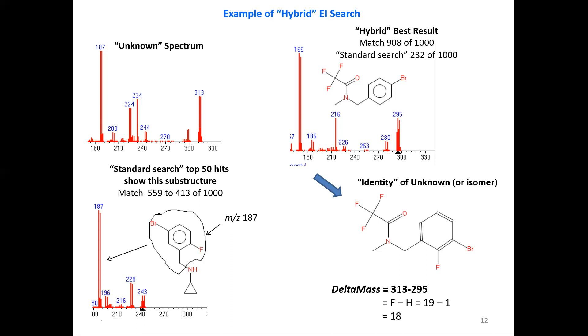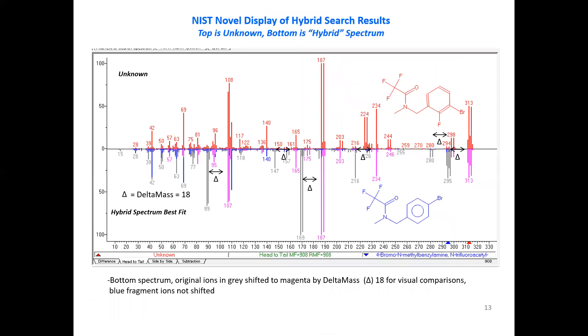They do have a very novel display of the hybrid search results, which I think is very effective and very efficient at looking at the hits in the list. They show here is the hybrid spectrum best fit on the bottom. We have our unknown on the top. Anything that's shifted by the delta mass goes from gray to magenta. And anything fragment ion that was not shifted stays blue. So when you look at these after a while, you get used to ignoring the gray and just looking at the blue and the magenta. And you can see why the hit is so high that approaches just a little over 900 because it actually is a good fit if you look at it in this regard.